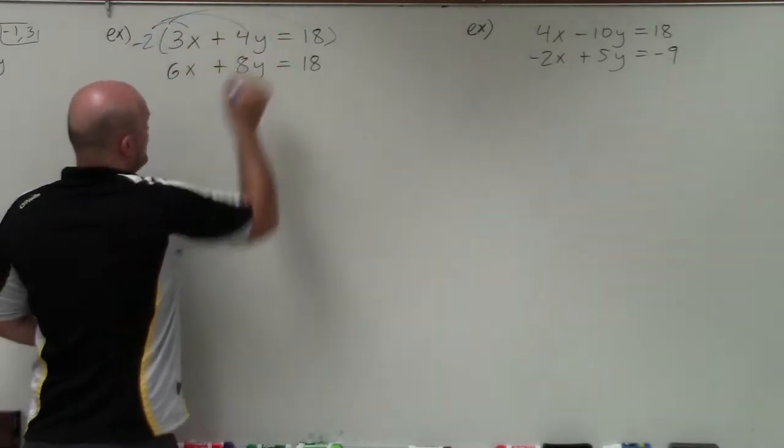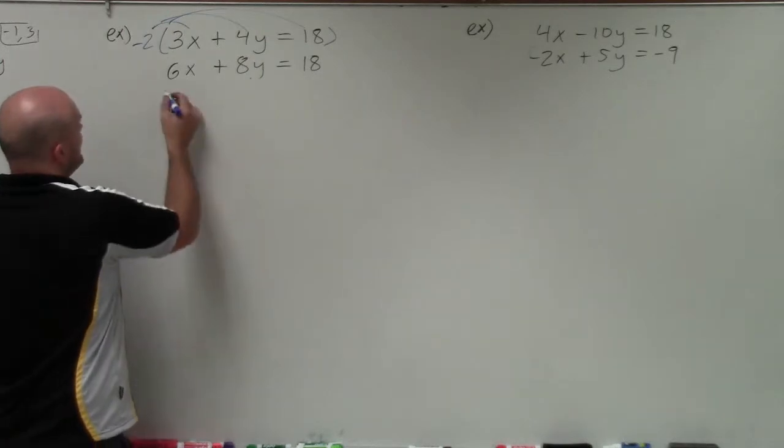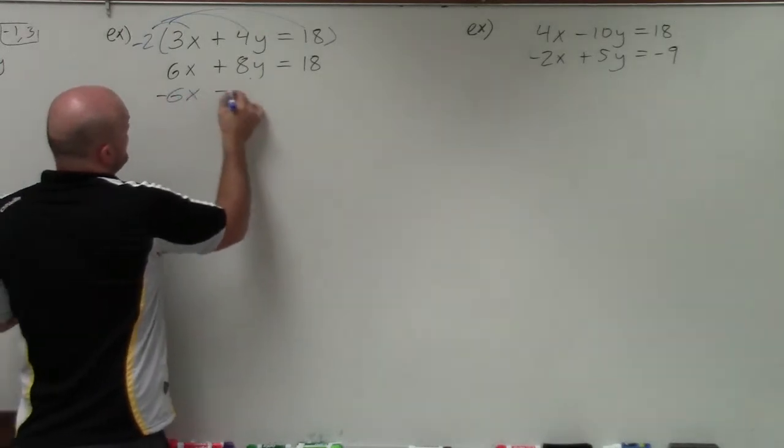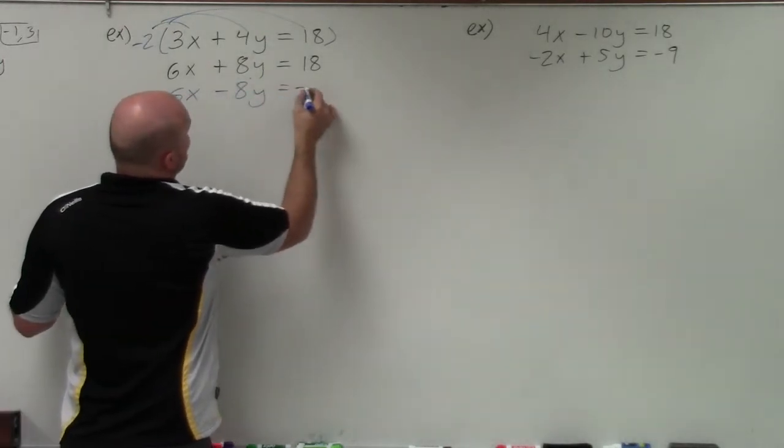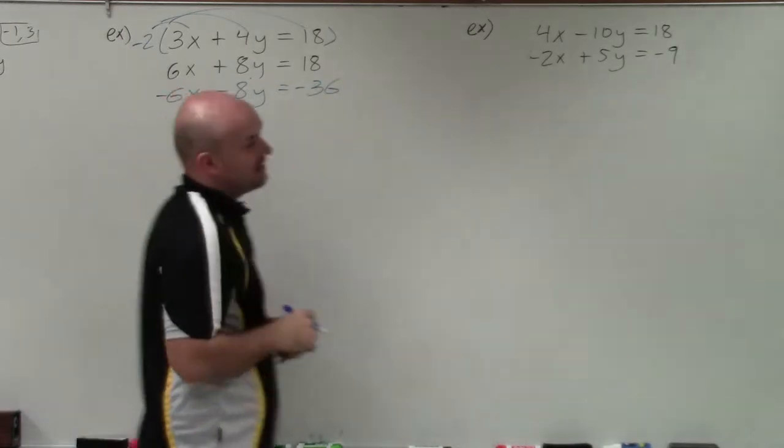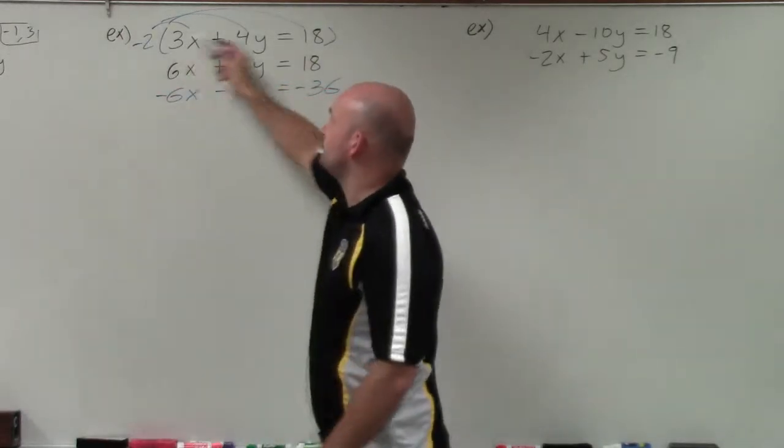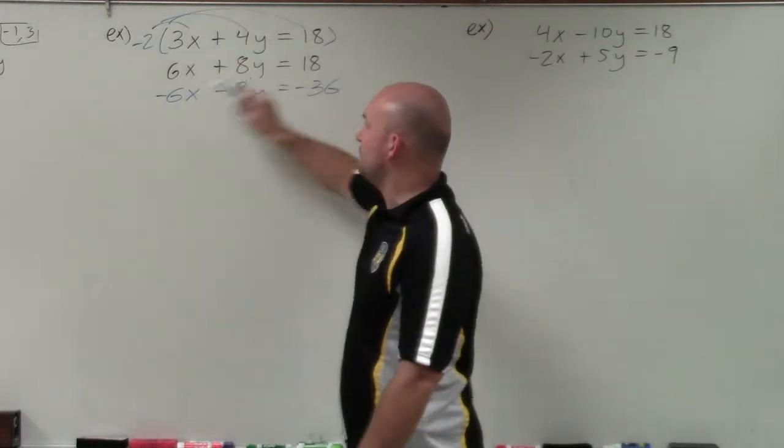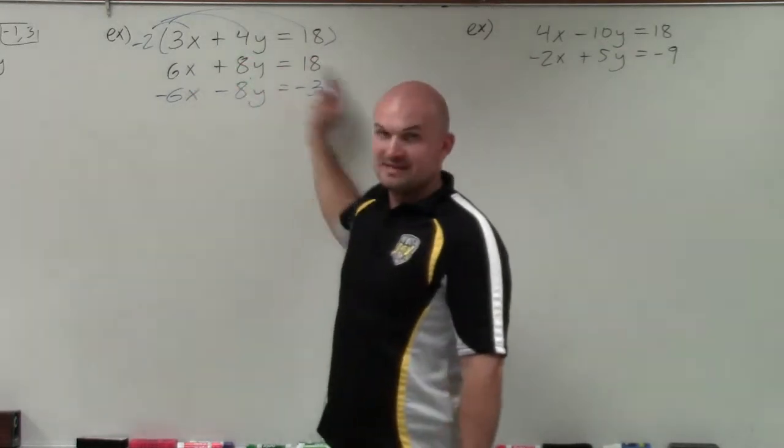So when I apply distributive property here, I now obtain negative 6x minus 8y equals negative 36. So now I basically have rewritten my top equation in blue. And I still have my second equation.